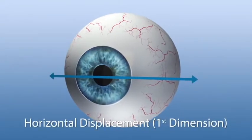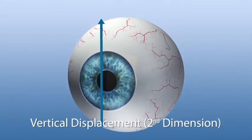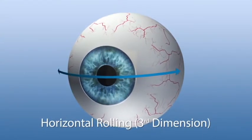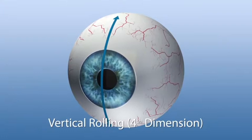The first and second dimensions are lateral movements. The third and fourth dimensions are rolling movements caused by a tilting of the head or of the eye.